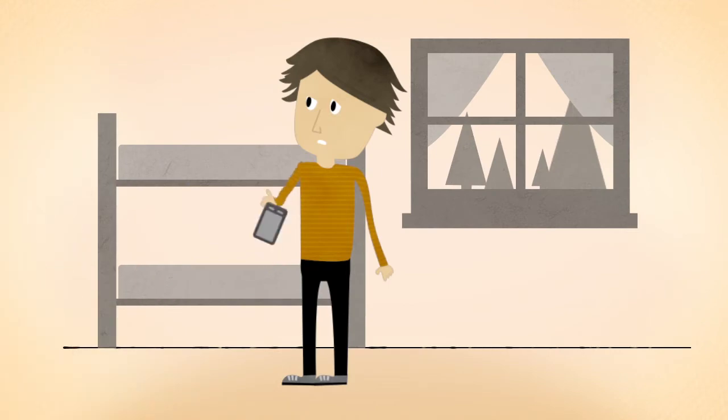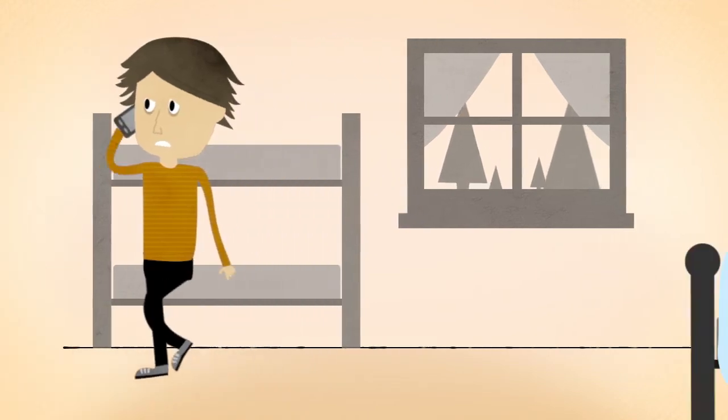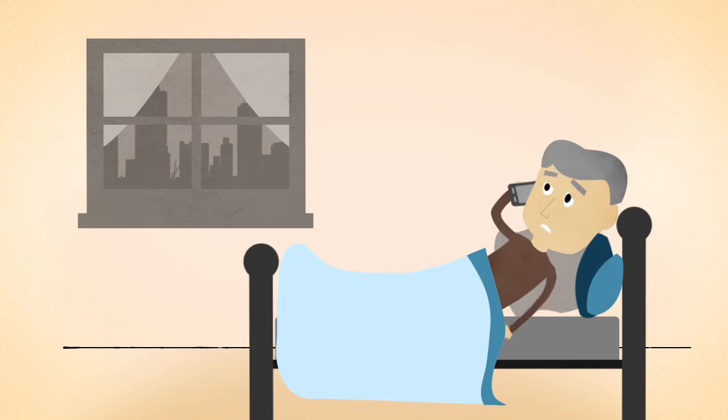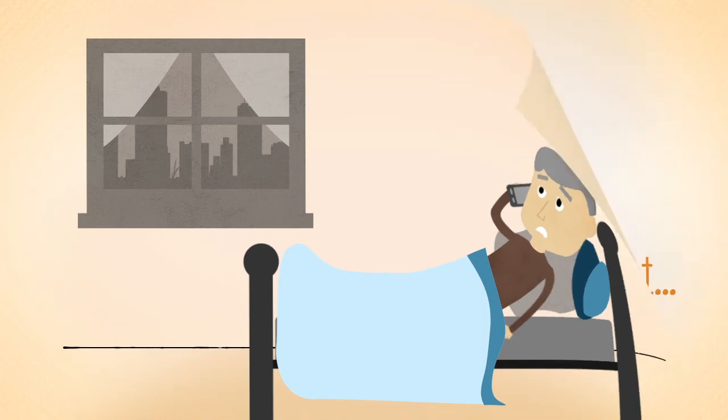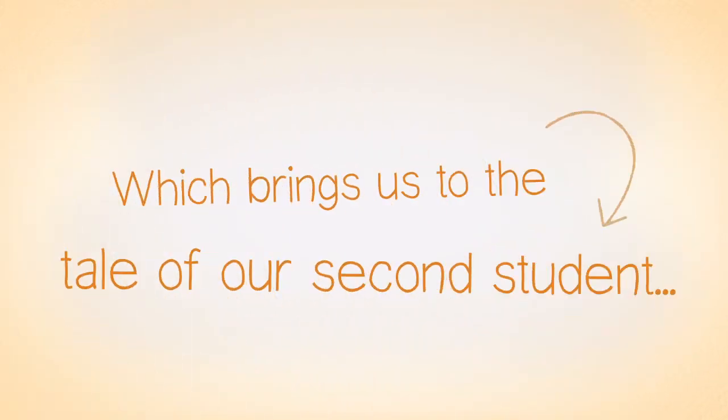Henry doesn't think he's so lucky, though. Neither do his parents. Because Henry needs to contact his parents and get the extra money, or he won't be able to register. Not the greatest way to start a new chapter in your life. Which brings us to our tale of the second student.